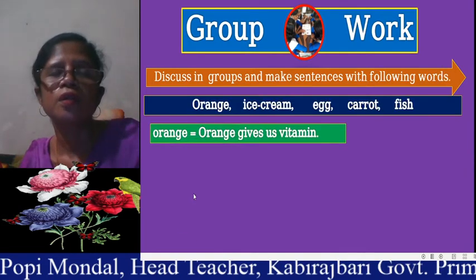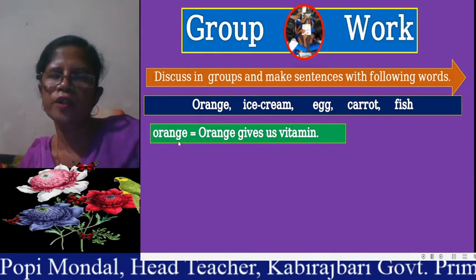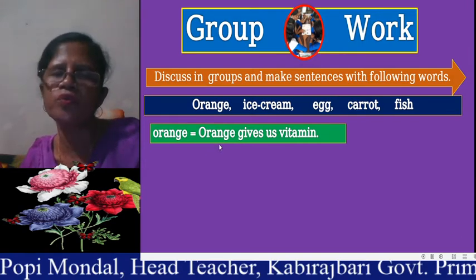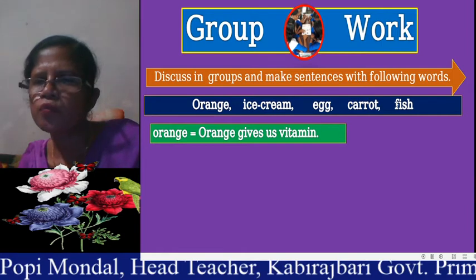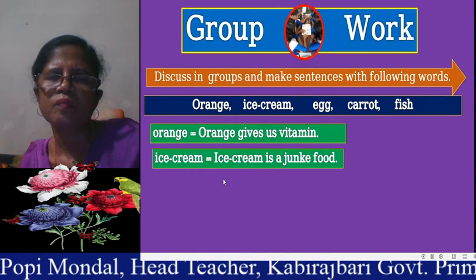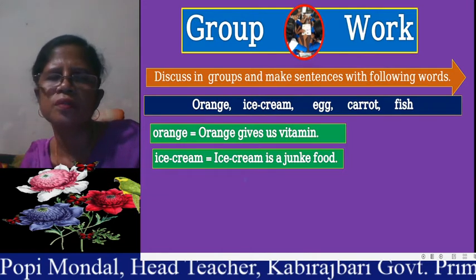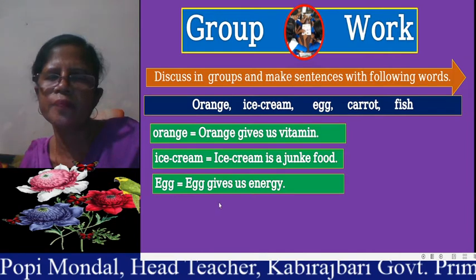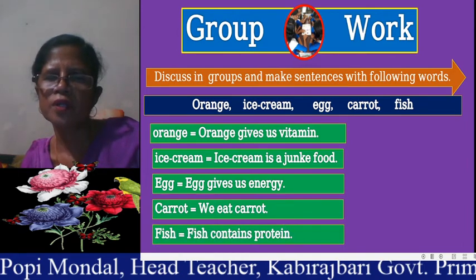Dear students, now make a sentence from these words: orange, ice cream, egg, carrot, fish. The first one is done for you — orange gives us vitamin. You make any sentence with these food items. Ice cream is a junk food. Egg gives us energy. I eat carrot. Fish contains protein.